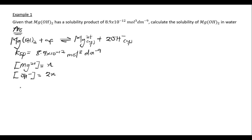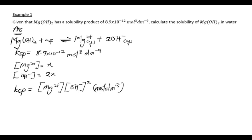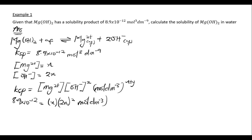We can now write the KSP expression. KSP equals the concentration of Mg²⁺ multiplied by the concentration of OH⁻ raised to the power 2. The unit is mol per dm³ raised to the power x plus y, where x equals 1 and y equals 2, giving a power of 3. Substituting, KSP = s × (2s)² = s × 4s².